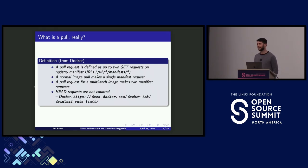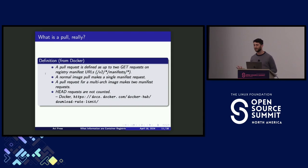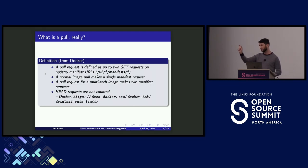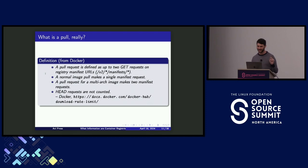So what is a pull? It's more complicated than most of us would expect. Docker defines a pull as one or two GET requests on a manifest. Typically there's a v2 prefix on most modern container registries, with identifiers for the repository, and 'manifests' in the path specifying the tag. A normal image pull makes one request to a manifest, but if we are fetching a multi-arch image we might fetch two manifests. So we have to keep track of what kind of thing was being fetched to know if this is one or two downloads — it's already getting more complicated.